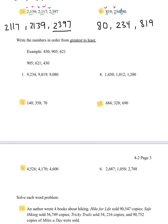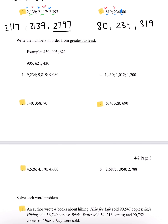Moving on, now we're going to write the numbers in order from greatest to least. The example shows 430, 905, and 621. If we look here, 9 is greater than 4 or 6, so 905 is right in front. After that is 621, since 6 is greater than 4, and lastly we have 430, which is the least number. I'm going to be going over numbers 2, 3, and 5.